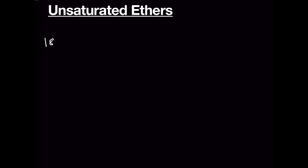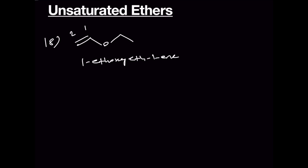We can write one more isomer — number 19. Put the double bond between C1 and C2, with an ethoxy group: 1-2, giving 1-ethoxyeth-1-ene. Keep in mind that the double bond gets higher priority compared to the single bond, which gets higher priority than the ether. Therefore this IUPAC name is correct. That is all about the aldehyde, ketone, unsaturated alcohol, and unsaturated ether isomers of C4H8O.